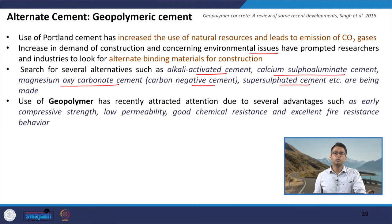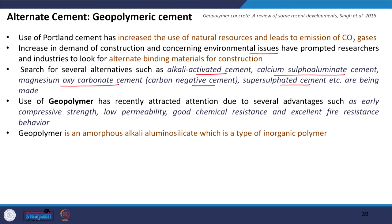Geopolymer concrete has attracted attention because of advantages such as early gain in compressive strength, low permeability, good chemical resistance, and excellent fire resistance behavior. These benefits have attracted researchers, scientists, industry, and government agencies. Geopolymer is an amorphous alkali alumino-silicate — a type of inorganic polymer — consisting of repeating units of sialate monomer represented as Si-O-Al-O.